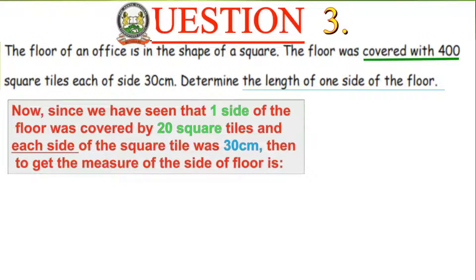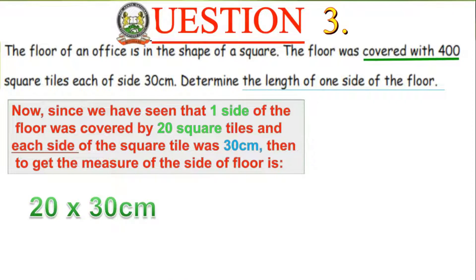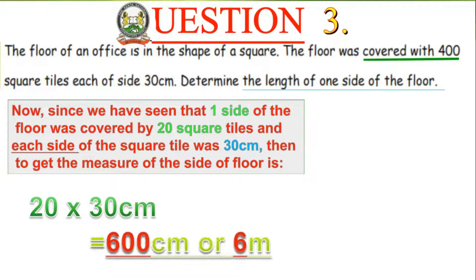Since one side of the floor was covered by 20 square tiles and each square tile has a side of 30 cm, the length of one side of the floor is 20 times 30 centimetres. So 20 × 30 = 600 centimetres, meaning the room was 600 centimetres or 6 metres.